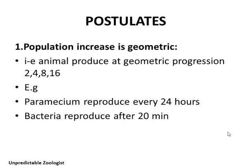We discuss the Darwinian theory postulates. The first postulate: the population increases in geometric progression. This means that the population increases at fast rates — that is, 2 to 4, 4 to 8, then 8 to 16. This is the geometric progression.